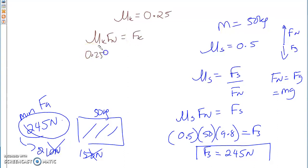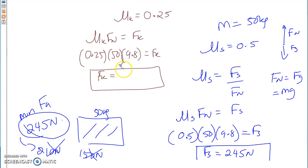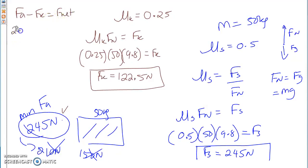What is your FK? It's 122.5 newtons. Look at that — FK is only 122.5. I'm still pushing with the same applied force of 245 newtons. Now FA minus FK equals F net: 245 newtons minus 122.5 gives you F net. What is your F net? 122.5 newtons.